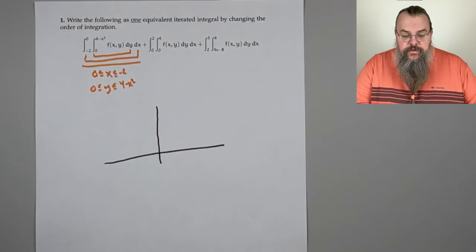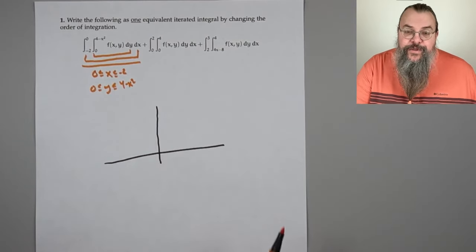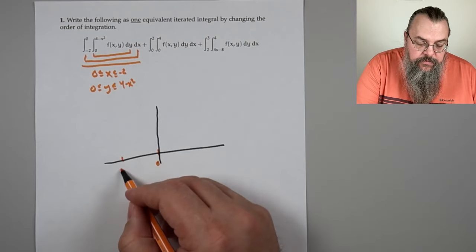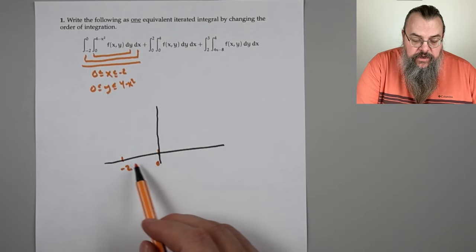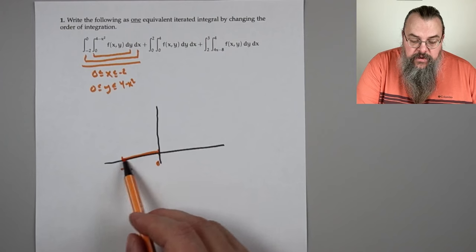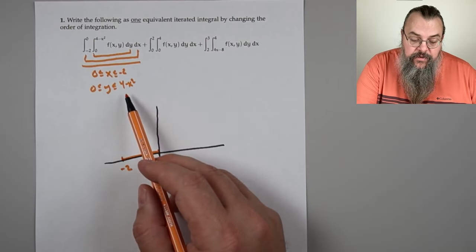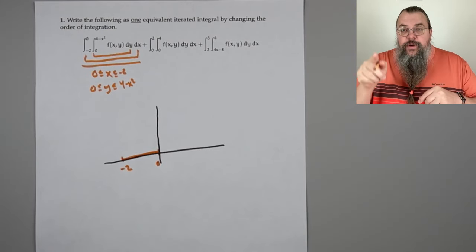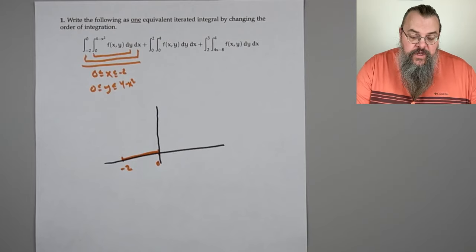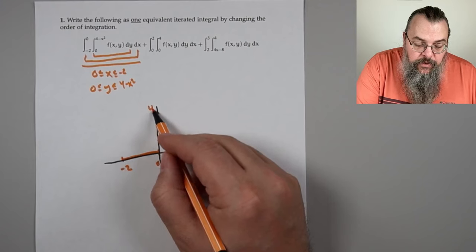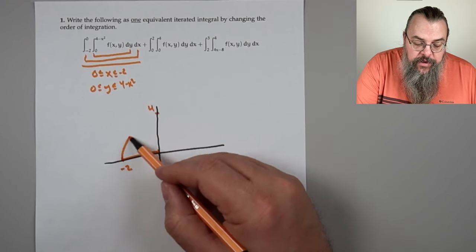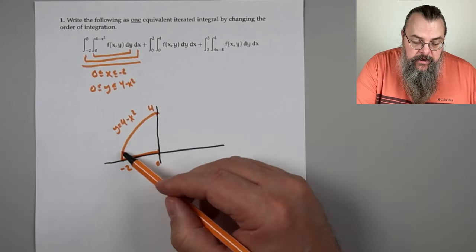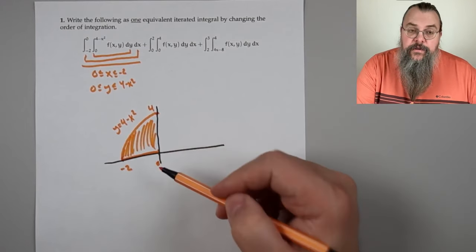Let's start with our first piece. We have layers: the outermost layer says x goes from 0 to negative 2, and the innermost layer says y goes from 0 to 4 minus x squared. Let's draw a picture because this is geometrical. We're going from 0 to negative 2 in the x direction, and y goes from 0 up to the parabola y equals 4 minus x squared — flipped upside down.